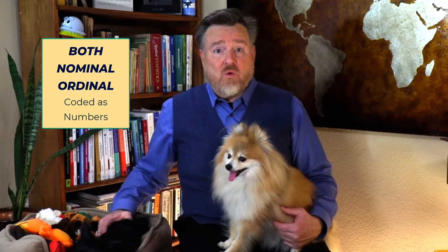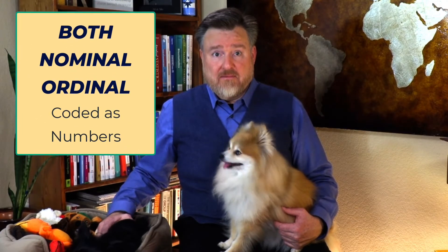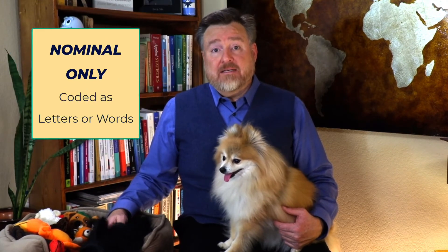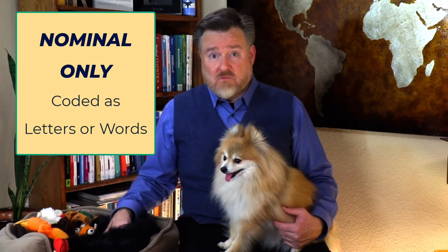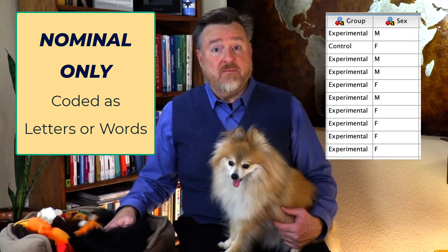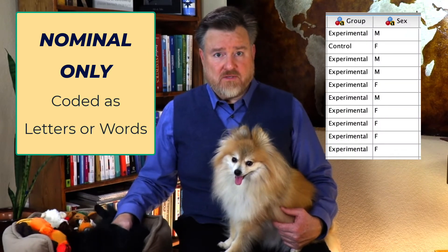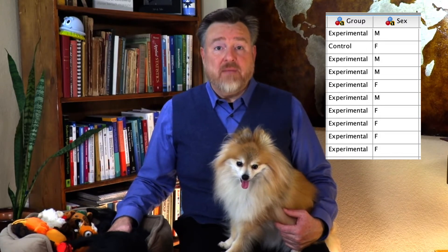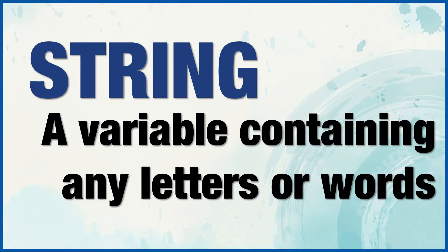Both nominal and ordinal data can be numeric, coded only as numbers. Some nominal data may be coded as letters or words, such as experimental and control for the research groups, or M and F for male and female. When nominal data are coded as words or letters, they are called string variables in SPSS. String variables can contain a combination of letters, numbers, or even symbols.